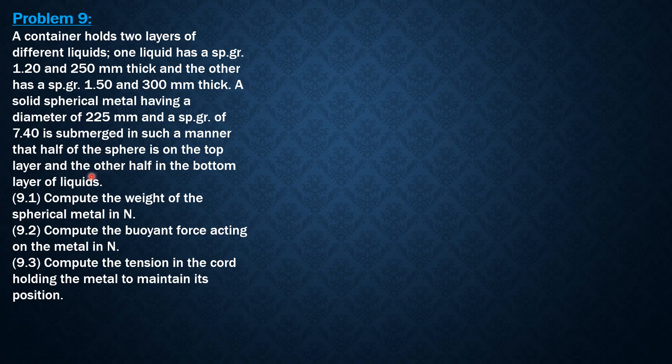So compute: (1) the weight of the spherical metal in newtons, (2) the buoyant force acting on the metal in newtons, and (3) the tension in the cord holding the metal to maintain its position. Let's draw the figure so that we can analyze the situation.